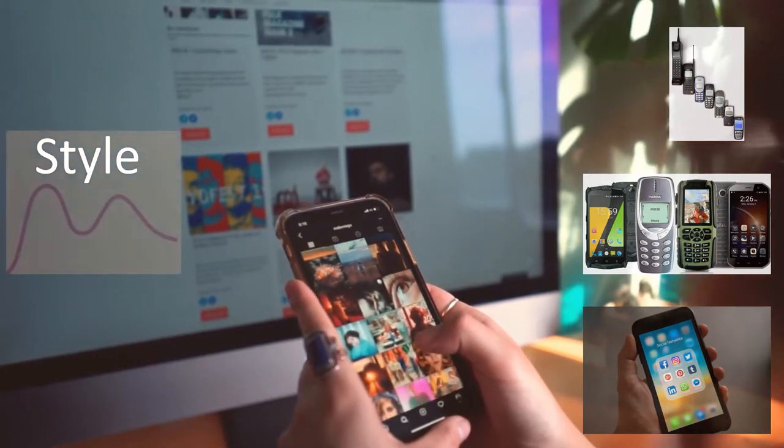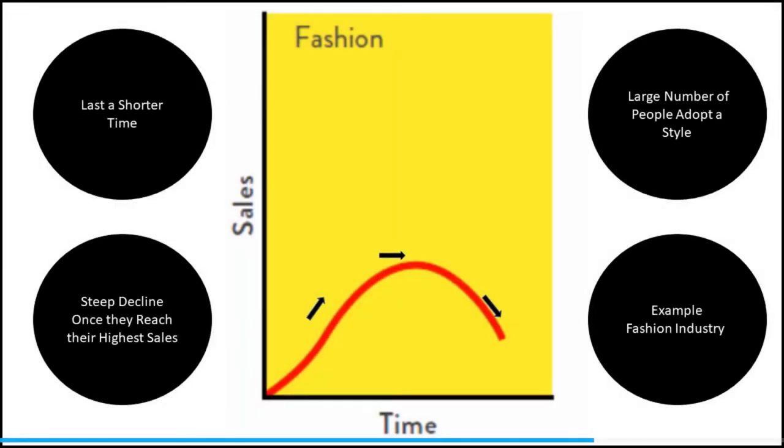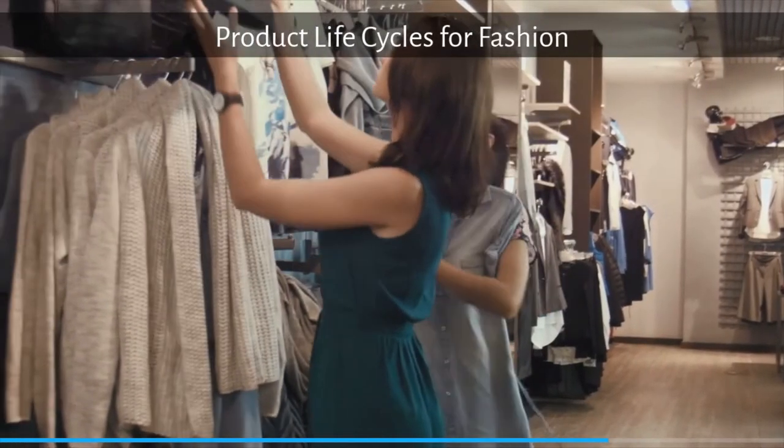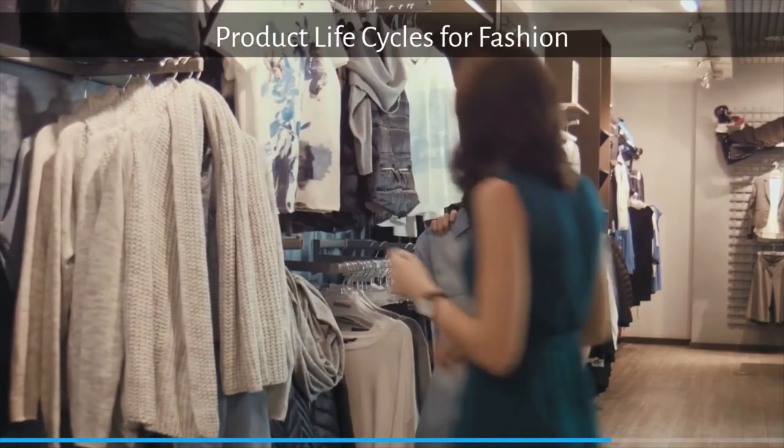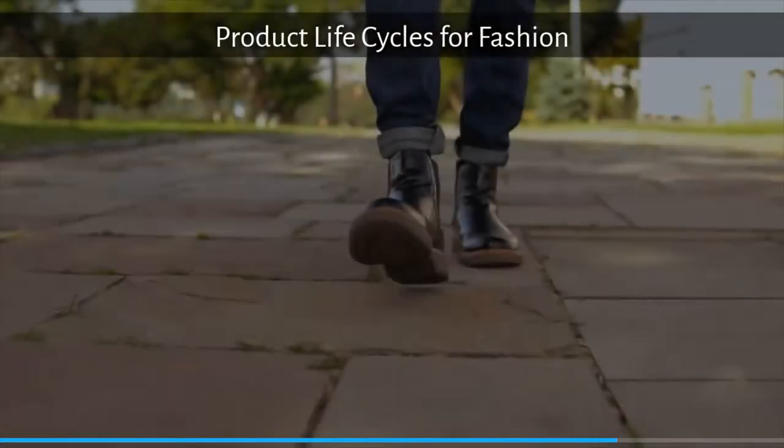So the shape of a style product lifecycle is like a wave. As one style fades out, another appears. The next one is fashion. Fashion, from a sales perspective, is not as steep or sharp as style. However, people eventually pick it up, and it eventually gets to the point where everyone's into it and then slowly fades away.